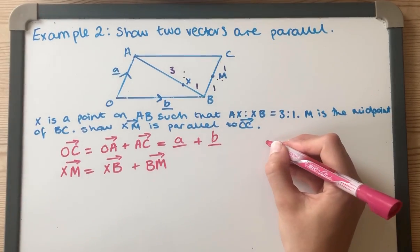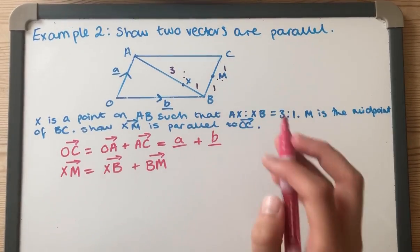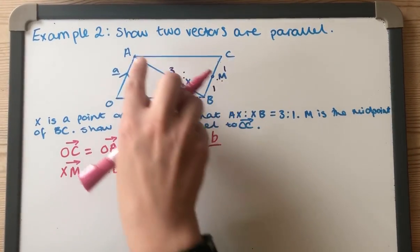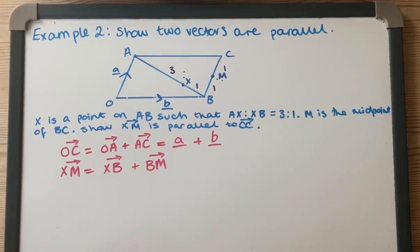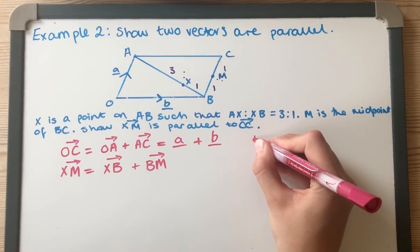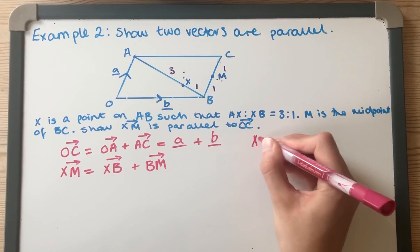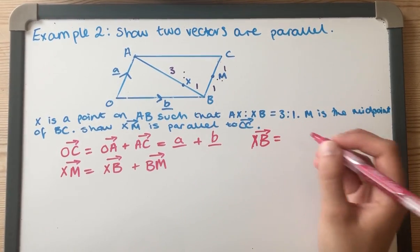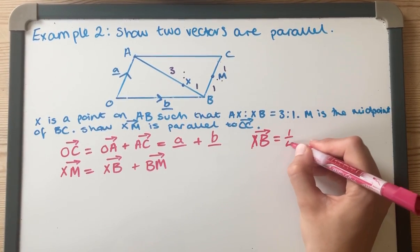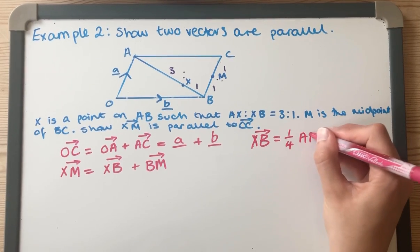Just over here I'm doing a bit of working when thinking about X to B. X to B is one quarter of this - X to B is one quarter of A to B.